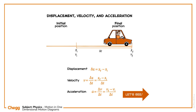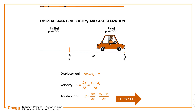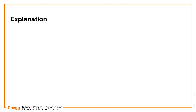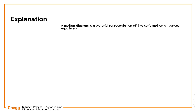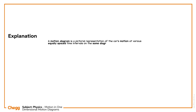Now let's see how to obtain the information about the position, the velocity, and the acceleration of the car with the help of a motion diagram. A motion diagram is a pictorial representation of the car's motion at various equally spaced time intervals on the same diagram.